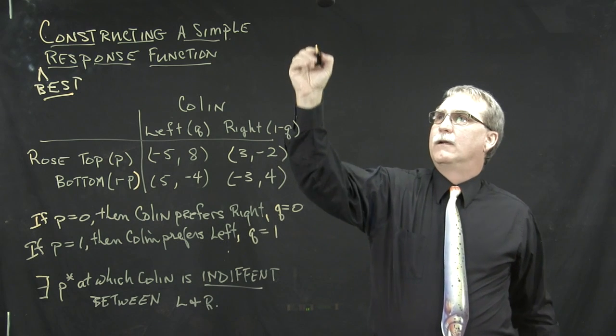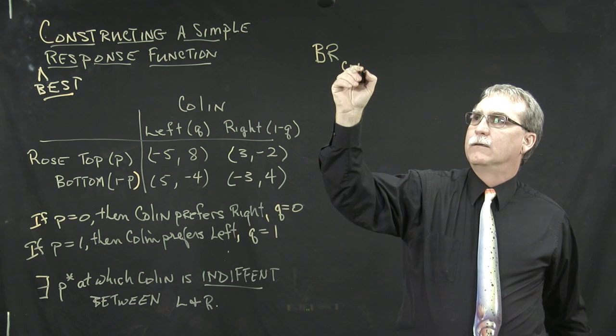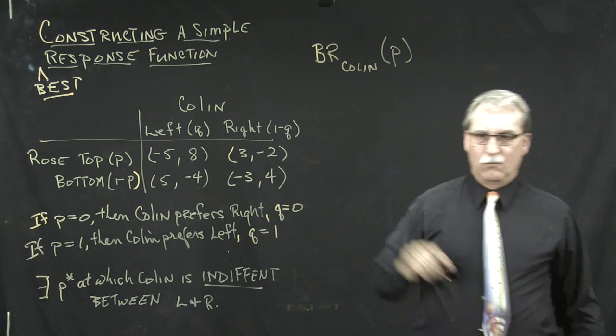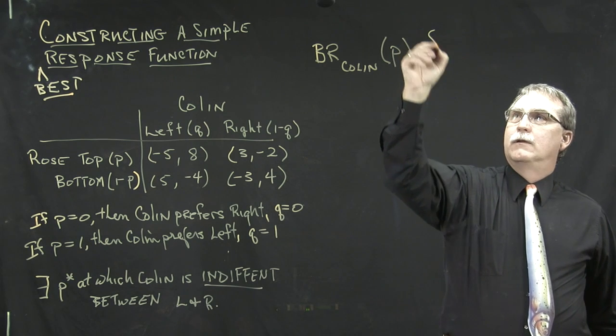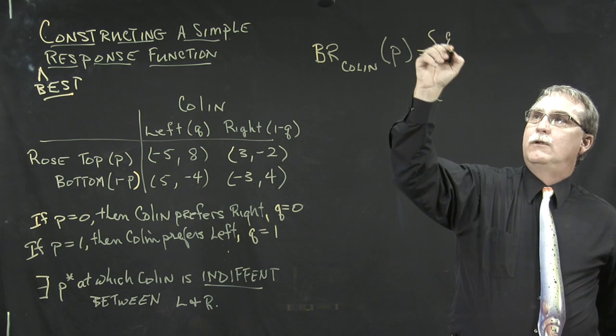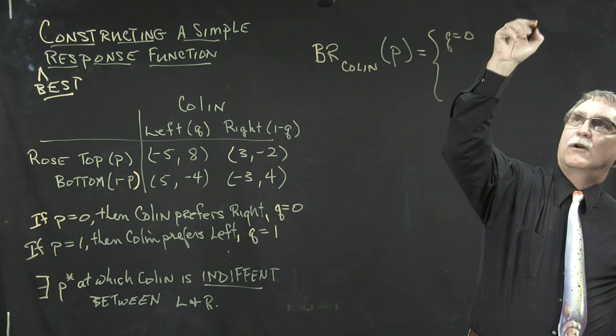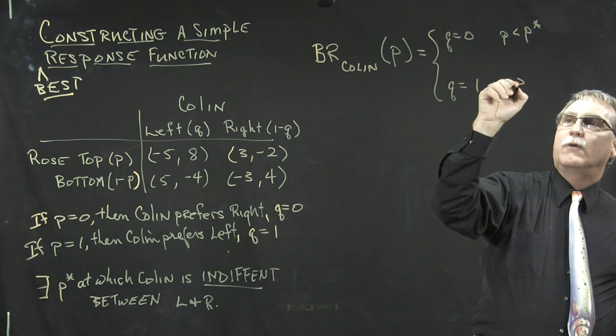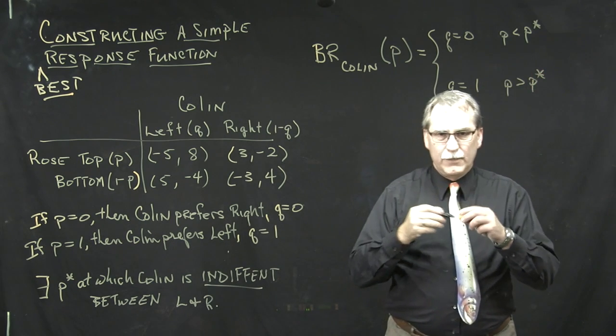So we have the best response by Colin to the strategy choice P that Rose is doing is going to be as follows. So we have the best response, Q equals 0 whenever P is less than this P star. Q is equal to 1 for P greater than P star. And again, this is just our intuition.